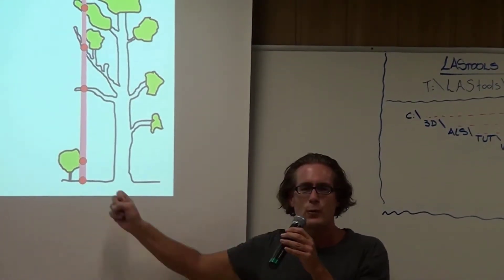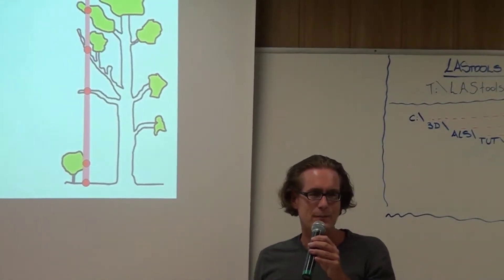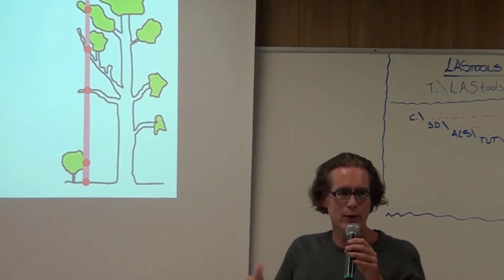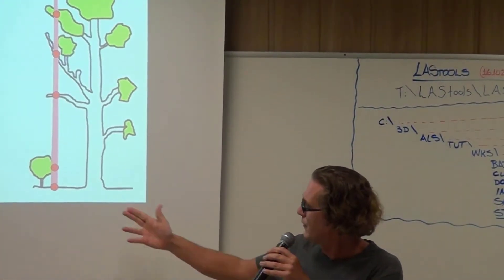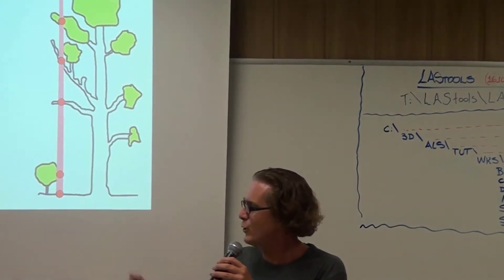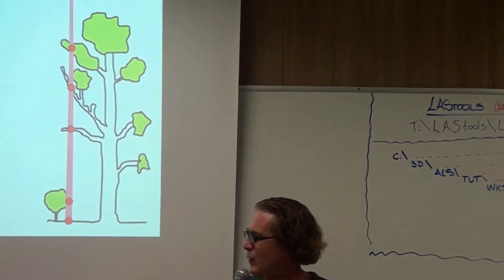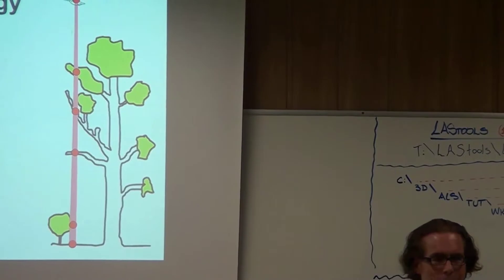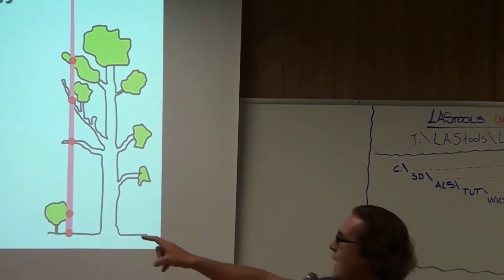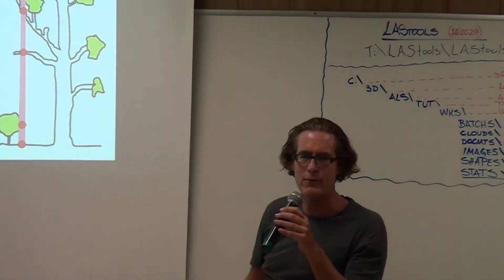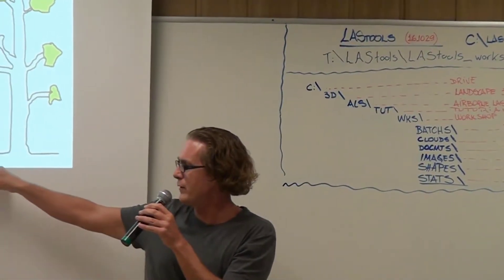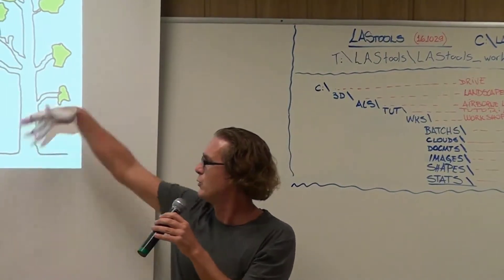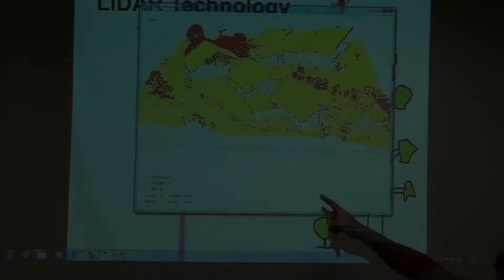This ground return is the one we really always want. No matter who you are. If you are an archaeologist, a geologist, a forester, or a hydrologist, you always want the ground return. Because for forestry, that gives us a reference how high the vegetation is above the ground. And the geologists, they usually only care about this. And archaeologists, they want to throw away the vegetation.